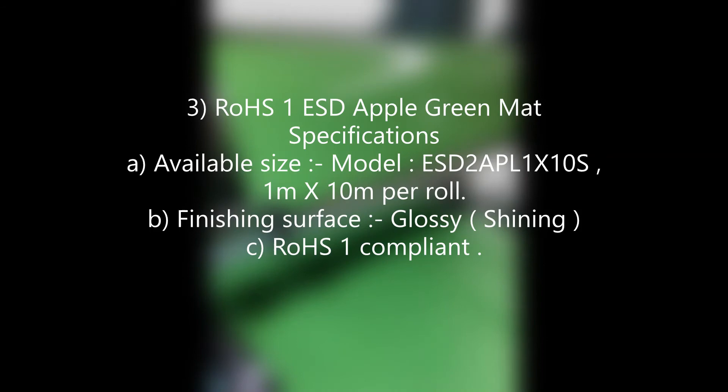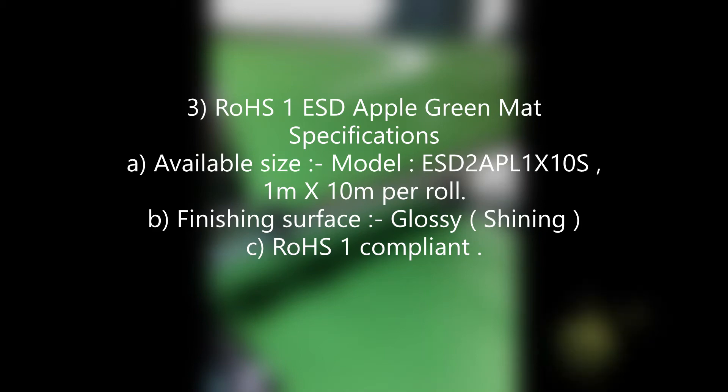Product 3: RoHS 1 ESD Apple Green Mat Specifications. A. Available size — model HTESD 2 APL 1 x 10S, 1 m x 10 m per roll. B. Finishing surface: glossy. C. RoHS 1 compliant.